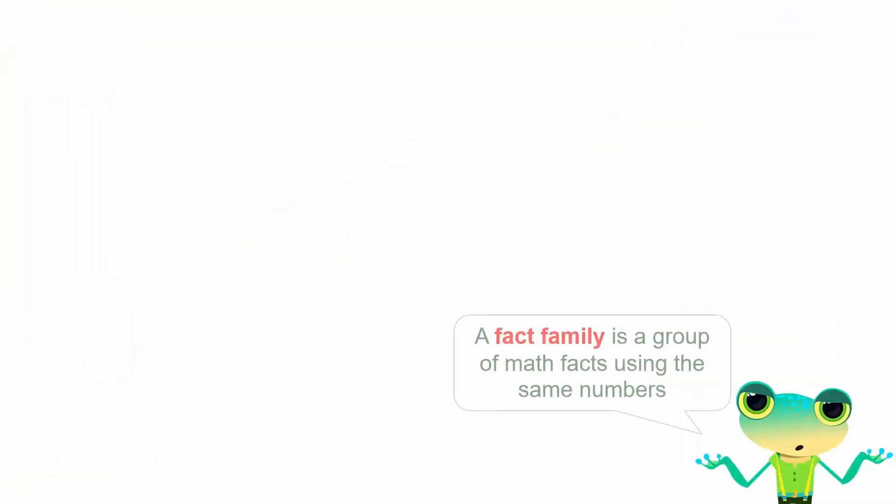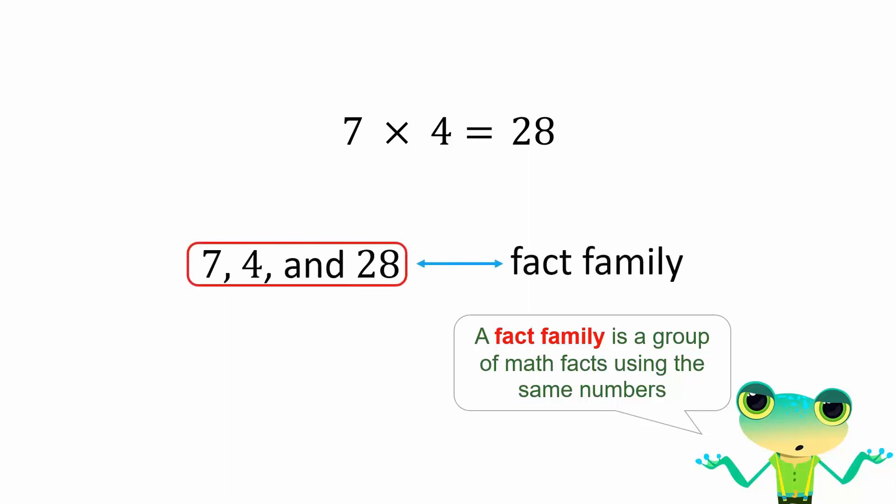The numbers involved in a multiplication calculation can also be called a fact family. For example, when we multiply 7 with 4, we get 28. In this, 7, 4, and 28 belong to a fact family.